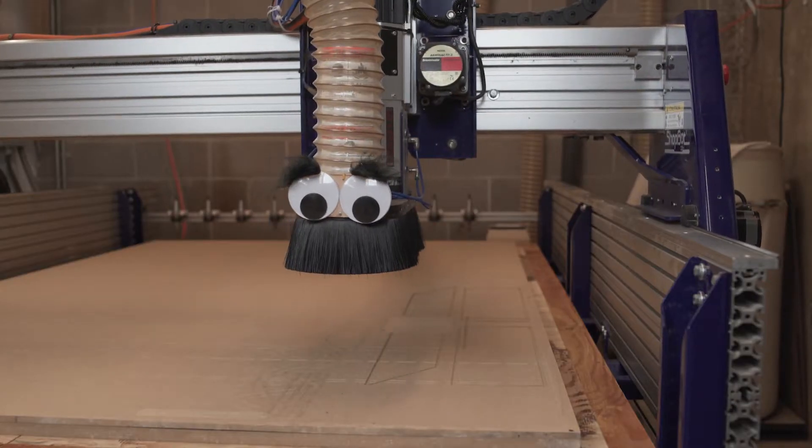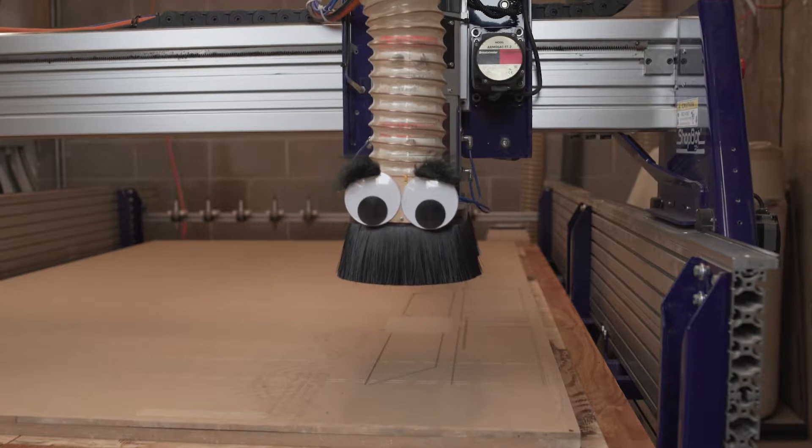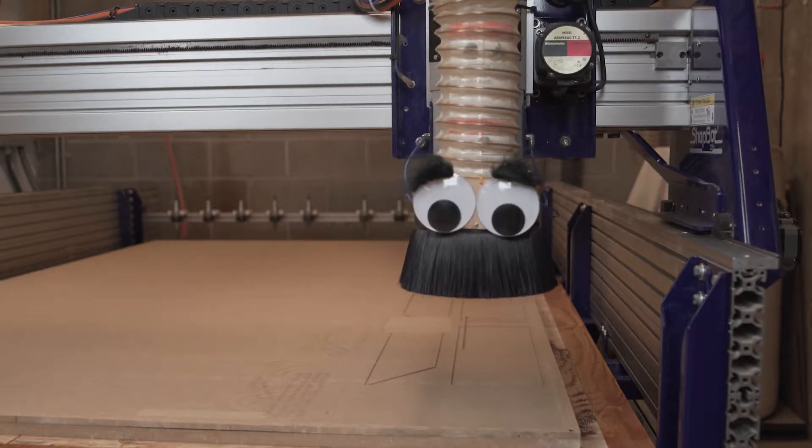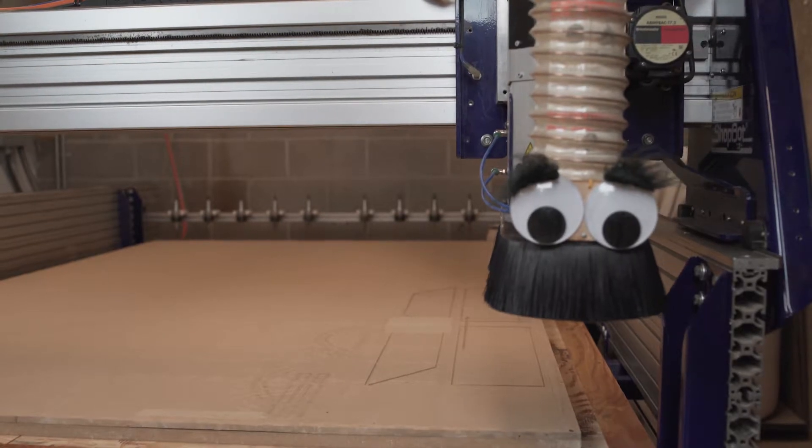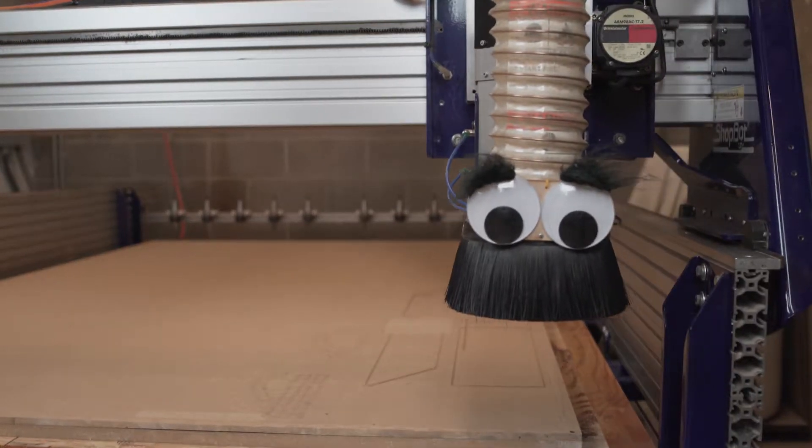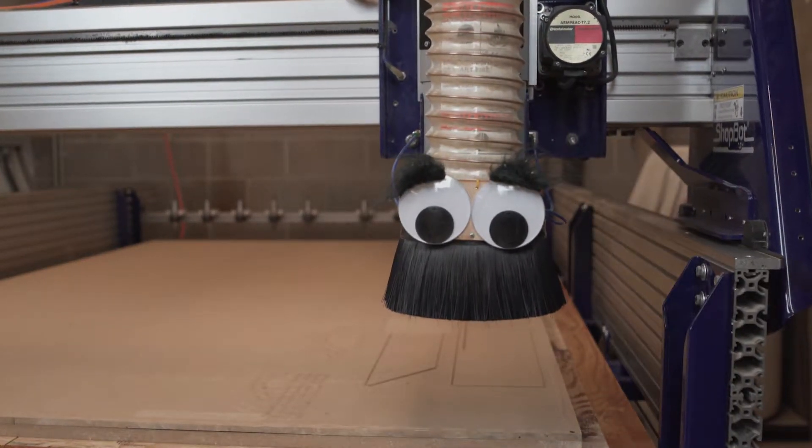All ShopBot operations are based on moving to precise X, Y, and Z coordinates. Those X, Y, and Z coordinates depend on a consistent origin or home. The homing routine is how the ShopBot finds that consistent origin.